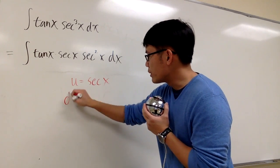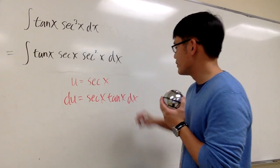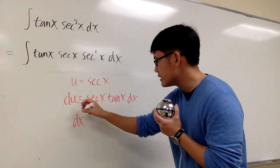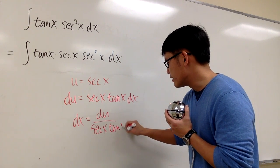And then I differentiate this, I will get du equals to secant x tangent x dx, right? And then I want to show you guys the cancellation, so let me isolate dx and I will get du over secant x tangent x.